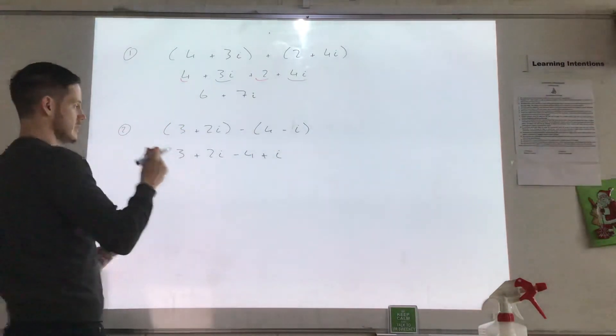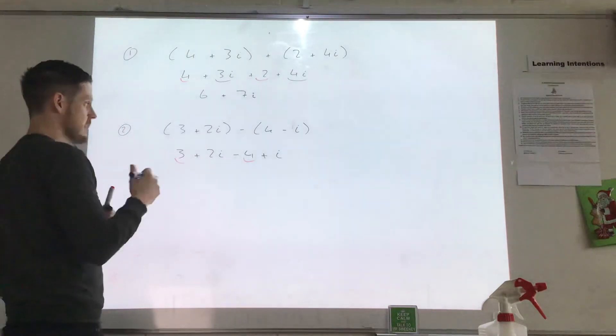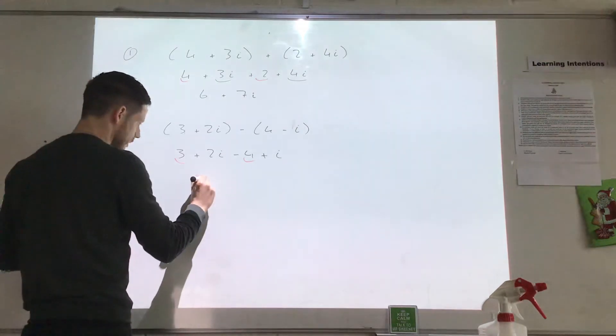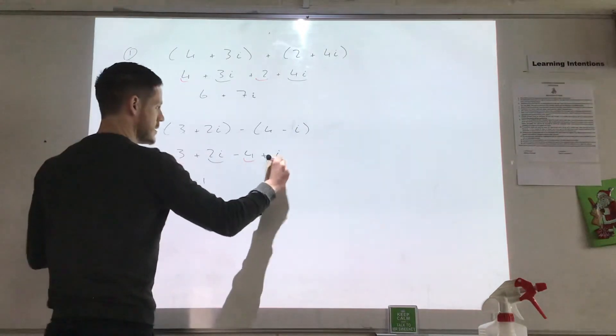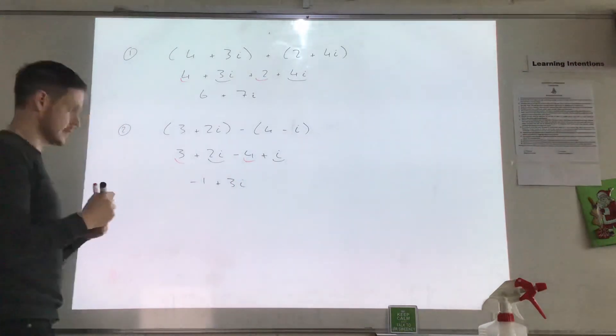And then all I do is, I do 3 minus 4. And 3 minus 4, I've got about €3 but I'm €4 in debt. I'm still €1 in debt so it's minus 1. And I've got 2i plus 1i gives me 3i. That's my answer there.